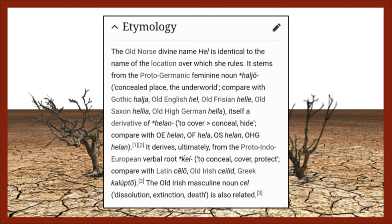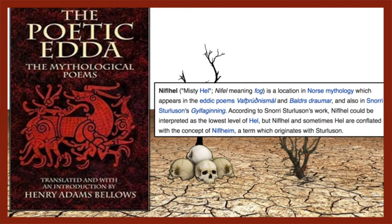So 'conceal' — con-seal — that word 'seal' is also a derivative aspect of hell rooted in K-E-L or K-A-L. From the Poetic Edda, the mythological text of Norse mythology, 'Niflhel' — meaning 'misty hell,' where 'nifl' means fog — is a location appearing in the Eddic poems. Niflhel could be interpreted as the lowest level of hell; sometimes Niflhel and Hel are conflated with the concept of Niflheim. This is well-documented in Norse mythology entirely independent of the Bible.